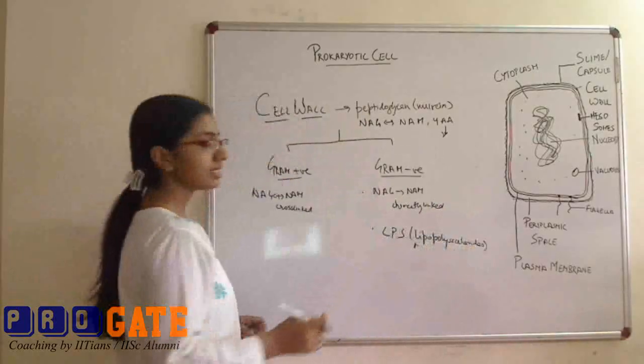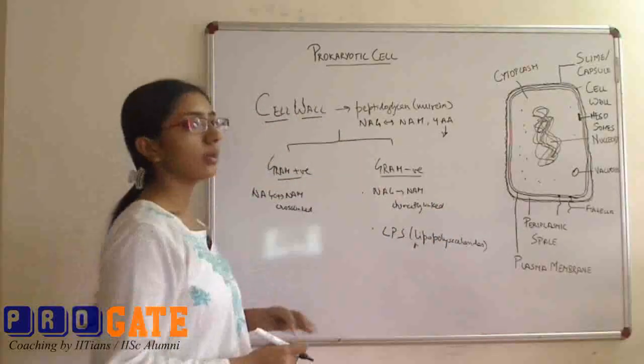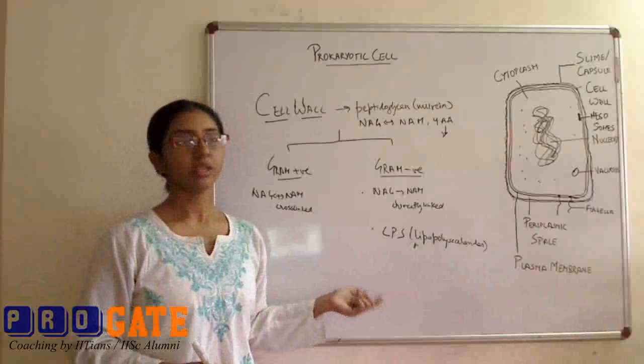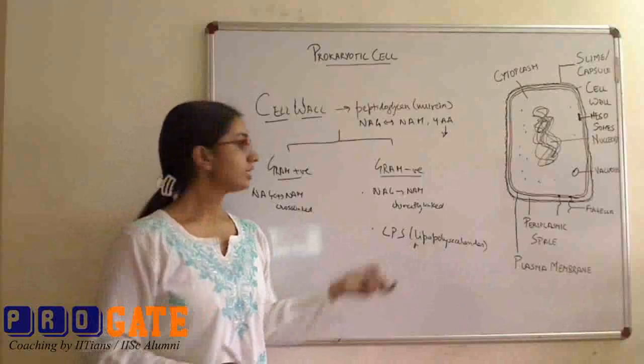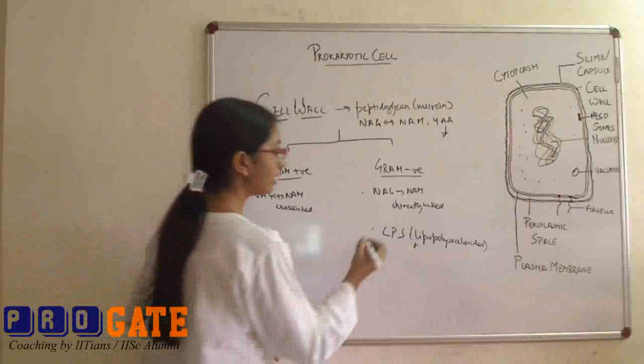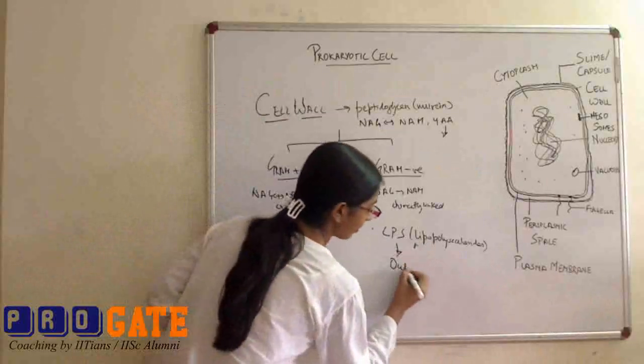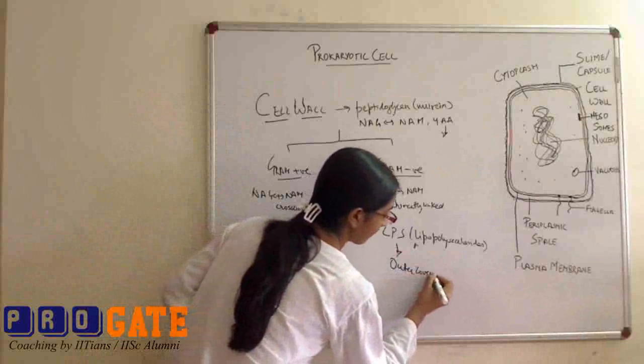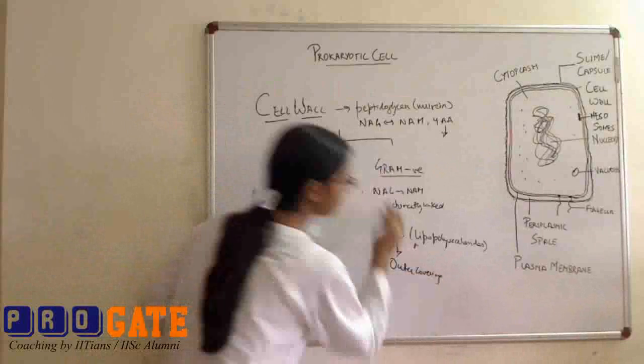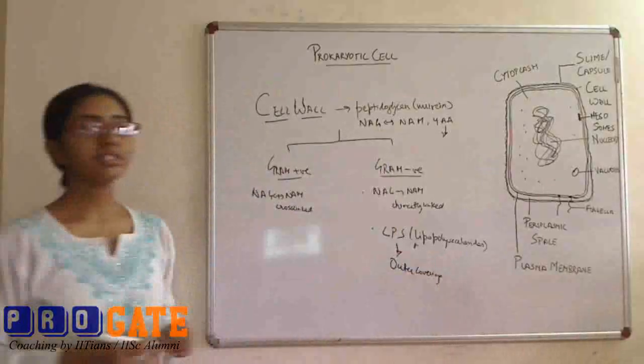LPS basically consists of three things: one is the lipid A, the O-polysaccharide, and the O-antigen. So this actually forms the outer covering for these bacterial cells. So what happens is during the staining,